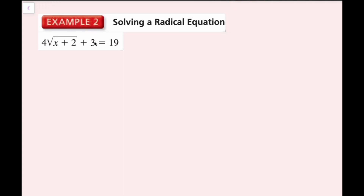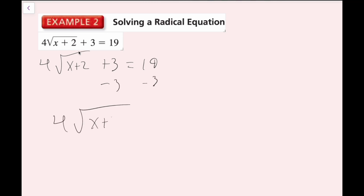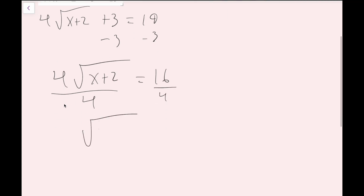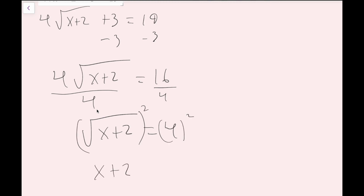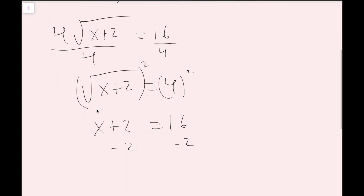For example 2, I solve the equation 4 times the square root of x plus 2, all plus 3, equals 19. First I subtract 3 to get 4 times the square root of x plus 2 equals 16. Then I divide both sides by 4 to isolate the radical, giving the square root of x plus 2 equals 4. I square both sides to get x plus 2 equals 16, then subtract 2 to get x equals 14.